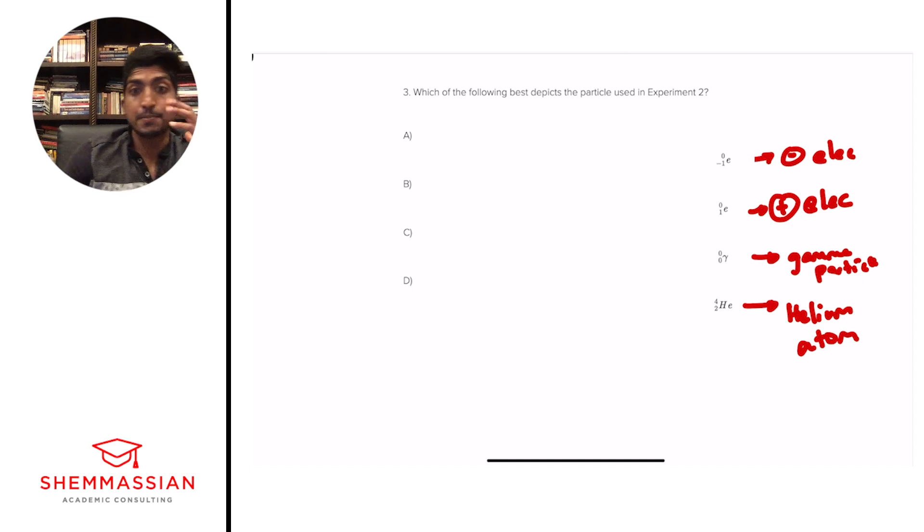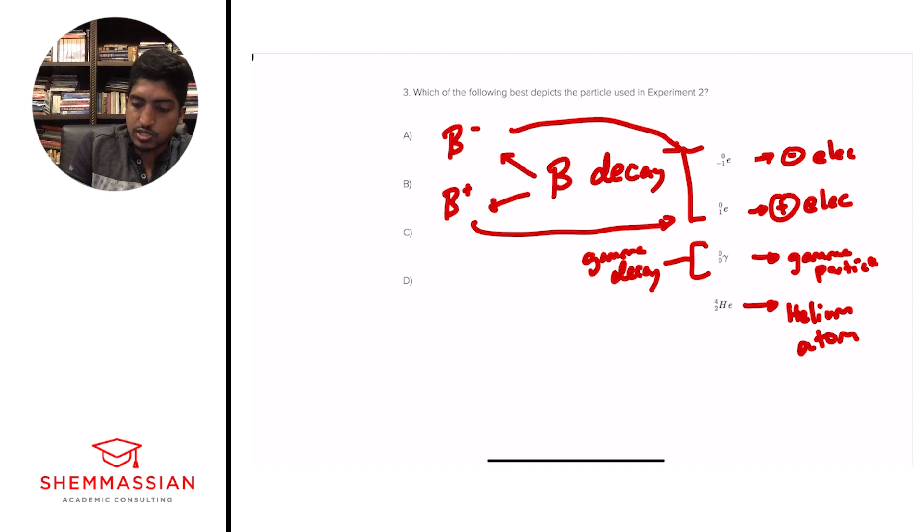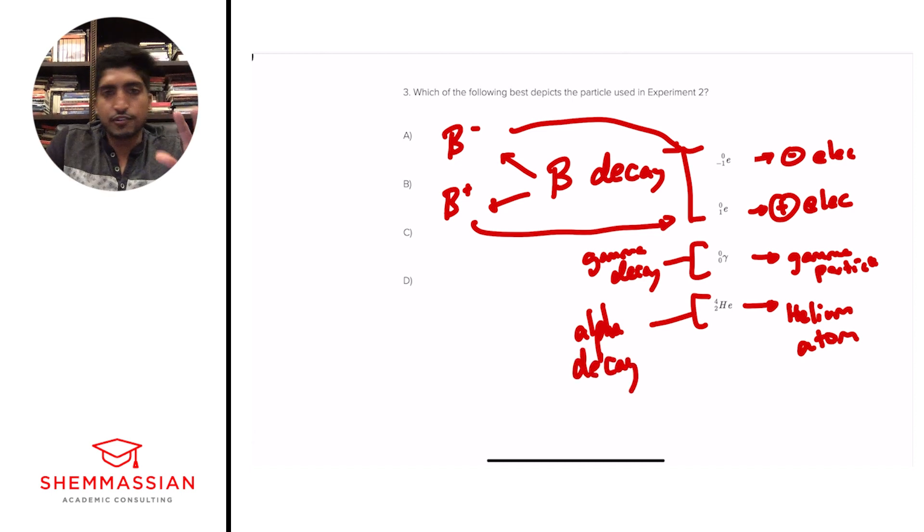And so with that, you need to be able to identify what types of decay are associated with these particles. And so the first one, I think the easiest, is this one. If we're dealing with a gamma particle, we're going to have gamma decay. Now, what about A and B? We're dealing with beta decay. And so remember, there's two types of beta decays. There's beta negative decay, which matches this one. If you're decaying into a positively charged electron, then you're going to have beta positive. If you're decaying into a negatively charged electron, beta negative. Alright. And then for two, normal helium atom, what are we decaying into? We're decaying into an alpha particle. This is an example of alpha decay.